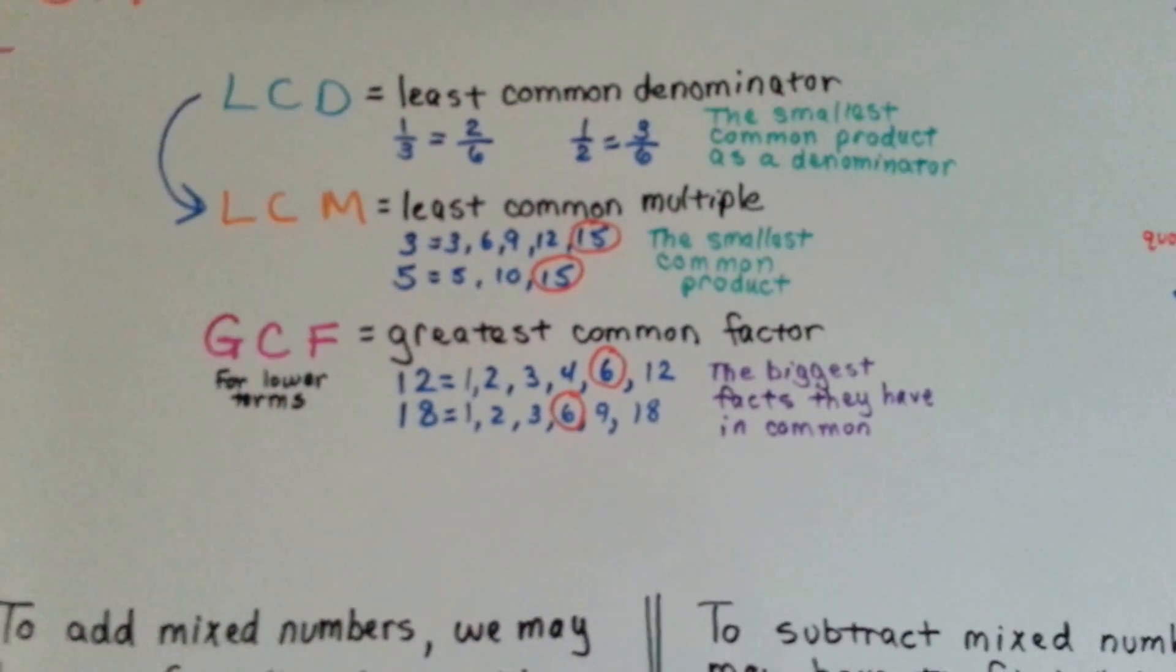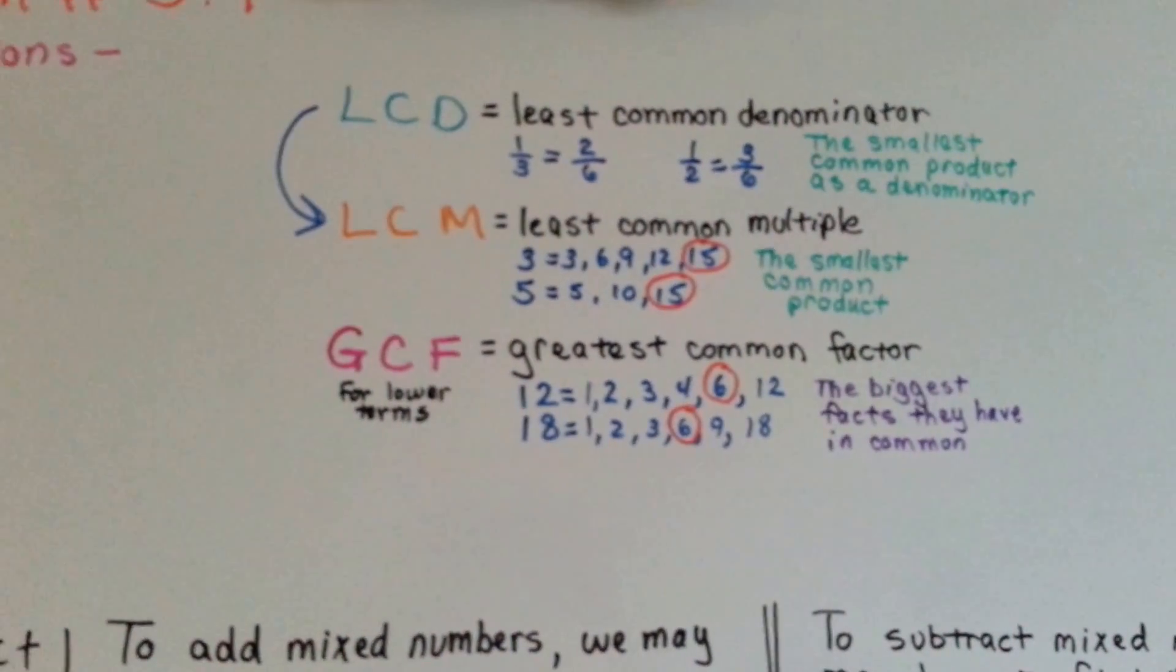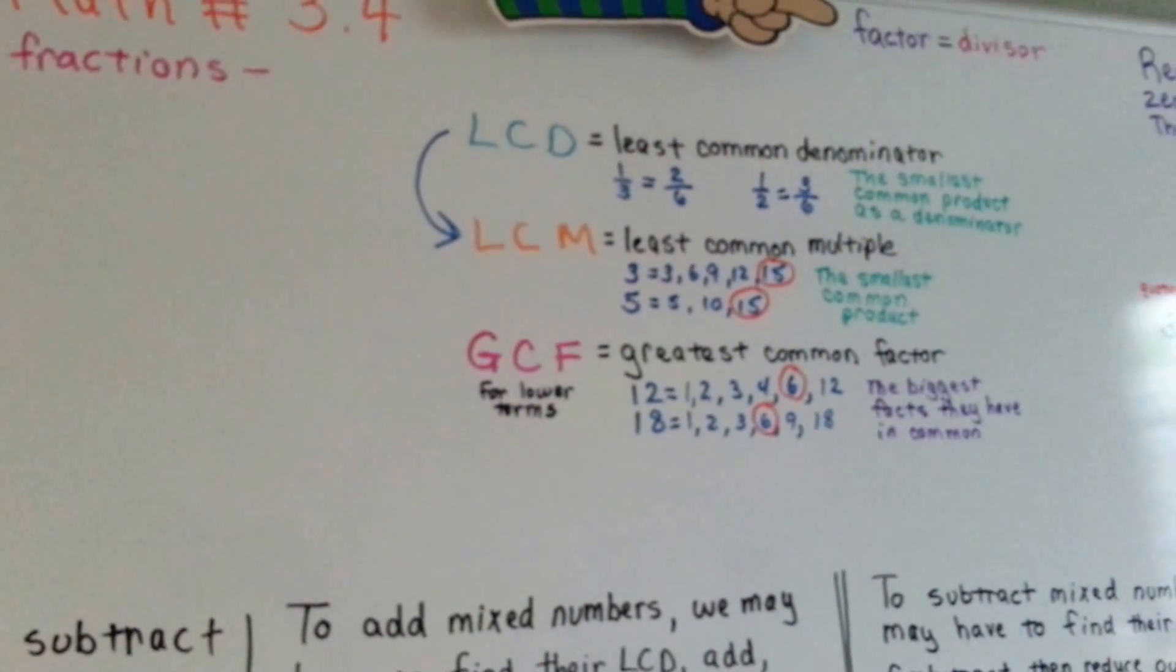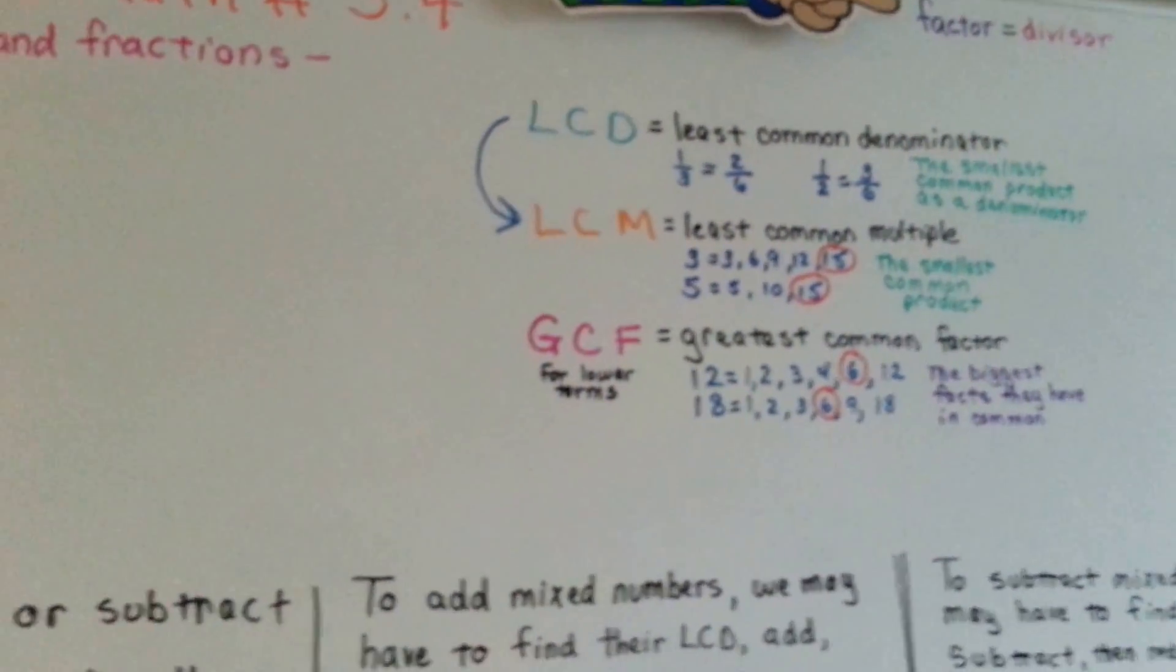So that's what those three are. So remember, the top two are basically the same thing. It's just the top denominator one. The LCD on the top is just used as a denominator.